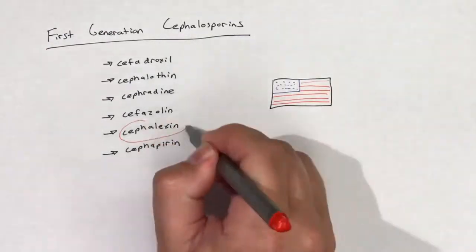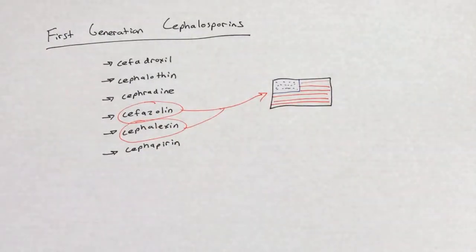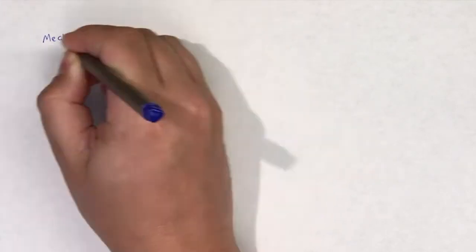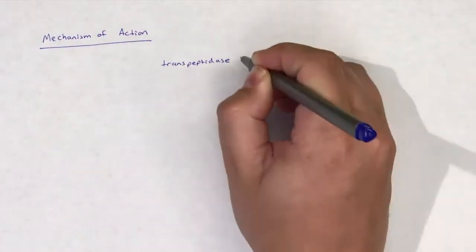Only cefazolin and cefalexin are available in the United States. First-generation cephalosporins share the same mechanism of action as other cephalosporins.